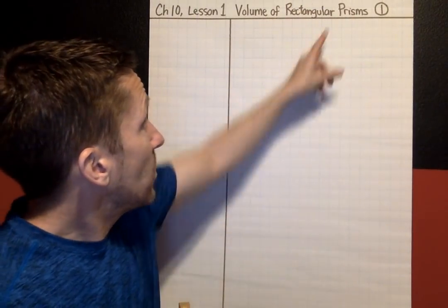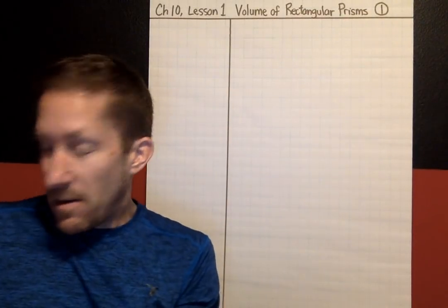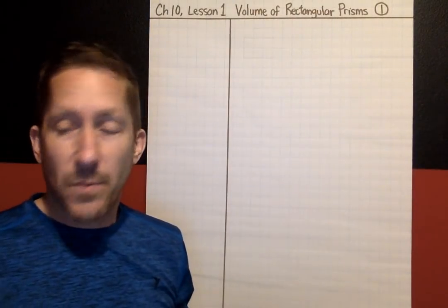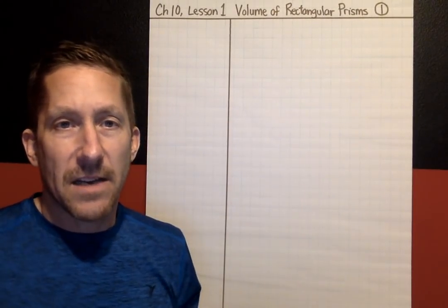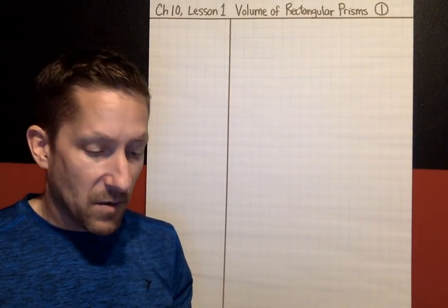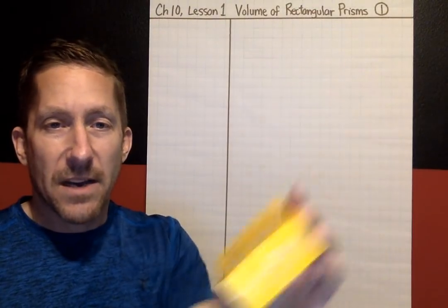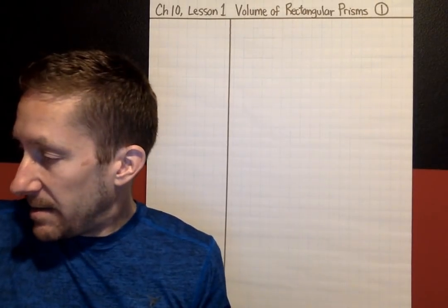So, you might be wondering: what is a prism? That's what we're going to talk about first. For this chapter, I really suggest that you use grid paper for your note page. You don't have to, but since we'll be talking a lot about drawing figures, the grid paper just makes it easier. Yesterday, you also started to explore volume already with blocks, building different figures with different length, width, and height. Okay, let's get started.